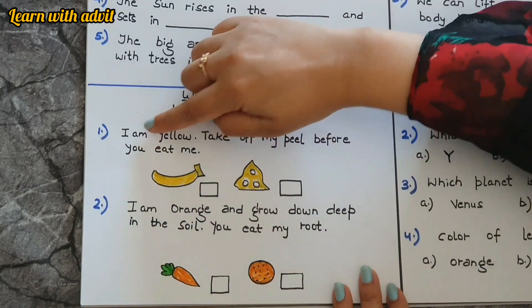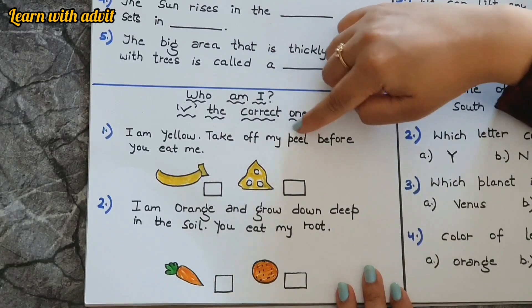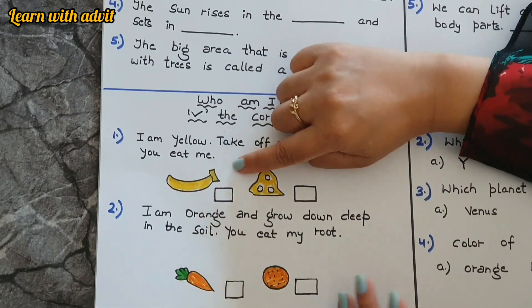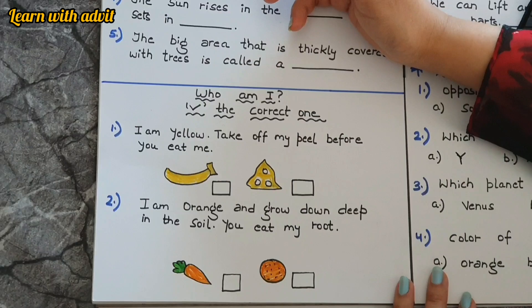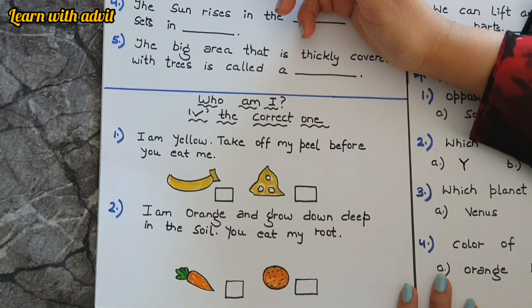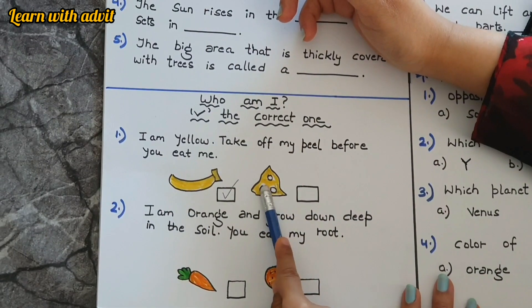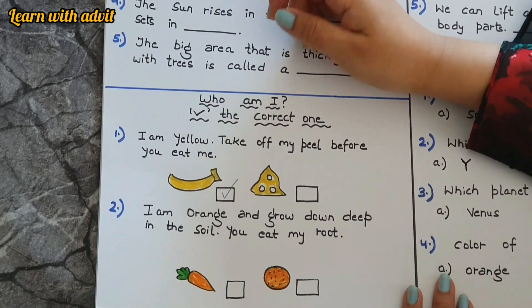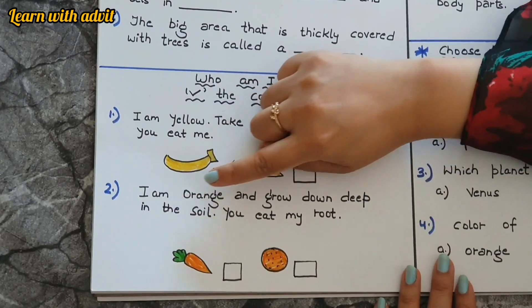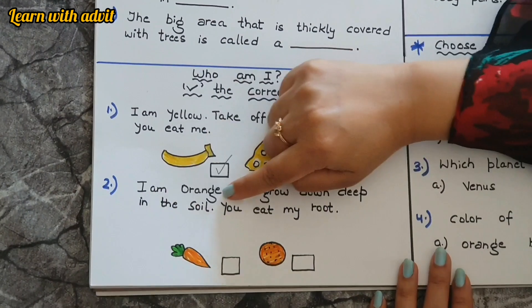By the clue, I am yellow, take off my skin and eat me. That means it's a fruit, so a banana is a fruit because you can't peel a cheese and eat it. Very good.